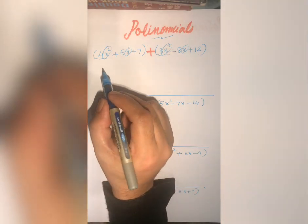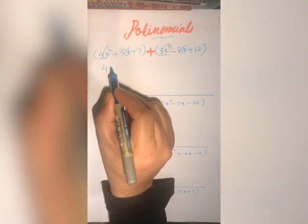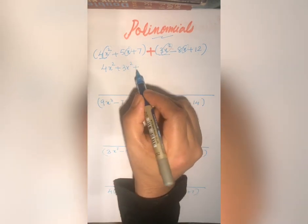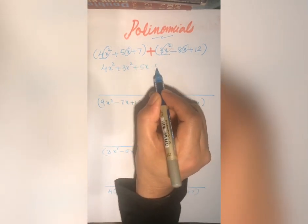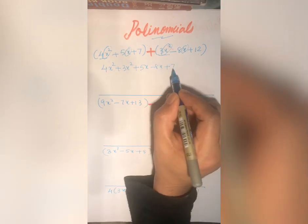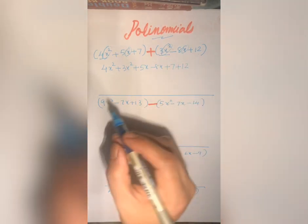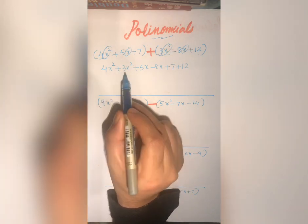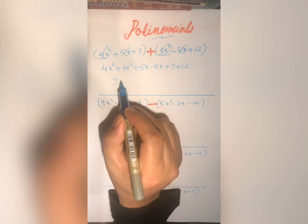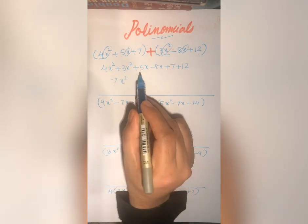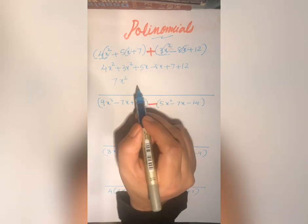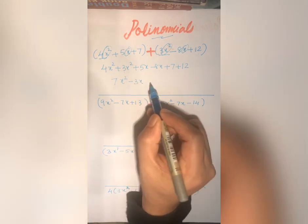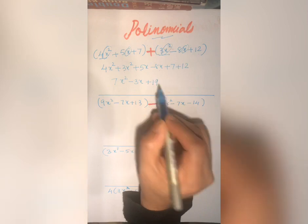Now we need to combine the like terms: 4x square plus 3x square, plus 5x minus 8x, plus 7 plus 12. 4 plus 3 equals 7x square. 5x minus 8x equals minus 3x. 7 plus 12 equals 19.